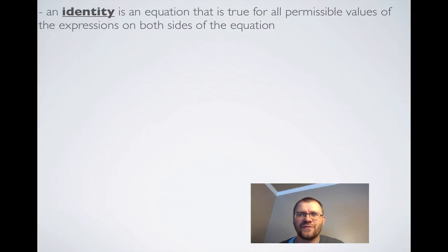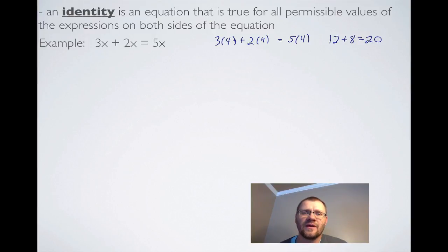An identity is an equation that is true for all permissible values of the expressions on both sides of the equation. Here's a simple one as an example: 3x plus 2x equals 5x. It doesn't matter what we put in for x. We know that when we add 3x and 2x together, we get 5x. Say we said x equals 4, then 3 times 4 plus 2 times 4 should be 5 times 4. That's 12 and 8, and that is 20. 12 plus 8 does equal 20. An identity is just an equation in which the left-hand side does equal the right-hand side.